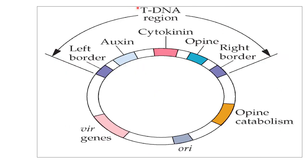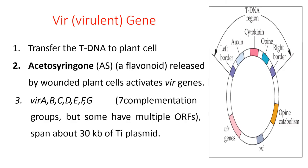Here is a picture of a Ti plasmid. It consists of an origin of replication site, vir gene region, and opine catabolism region. There is a T-DNA region which consists of a left border and a right border. Along with it, it has auxin, cytokinin, and opine synthesizing sites.